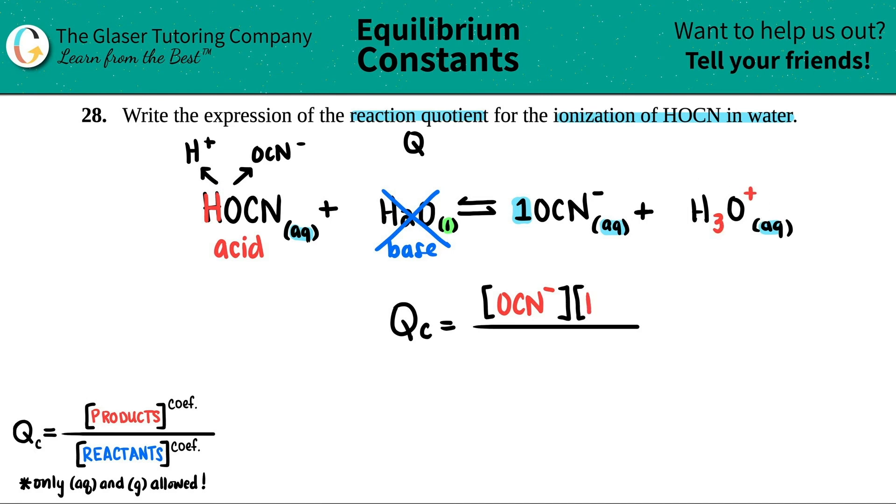And then times by the H3O plus. So that's the other product. Close that up. That's also raised to the first. You don't have to write that. And then the last one is the HOCN. Bracket that off. HOCN. That's a reactant. Close that up. You could raise it to the first, but we don't have to. And that's that.